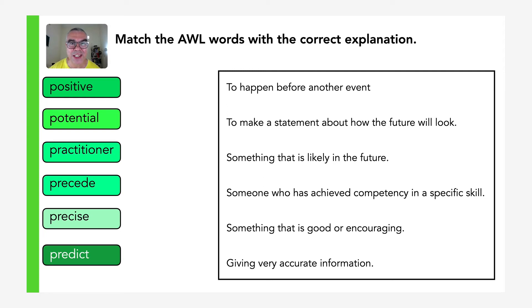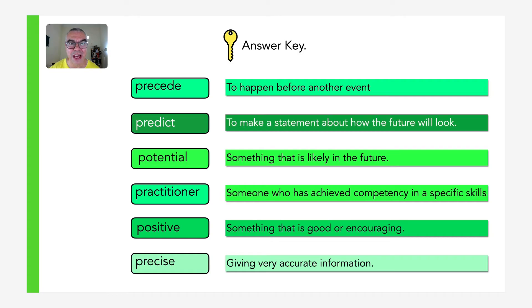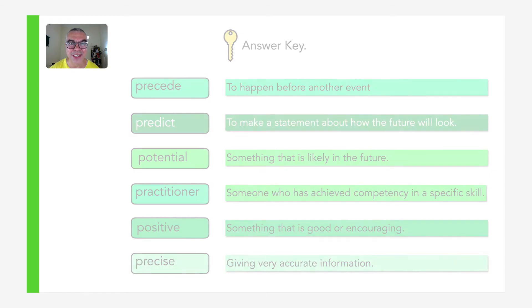Here are the answers. Proceed: to happen before another event — note the spelling with 'pre'. Predict: to make a statement about how the future will look. Potential: something that is likely in the future — the keyword here is 'likely'. Practitioner: someone who has achieved competency in a specific skill. Positive: something that is good or encouraging. And precise: giving very accurate information.